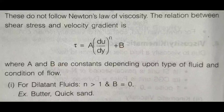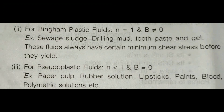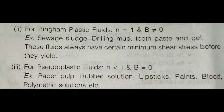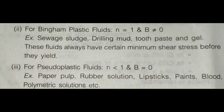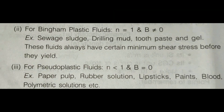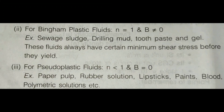For Bingham plastic fluids, n equals 1 and B is not equal to 0. Examples include sewage sludge, drilling mud, toothpaste, and gel. These fluids always have a certain minimum shear stress before they flow. For pseudoplastic fluids, n is less than 1 and B equals 0. Examples of pseudoplastic fluids include paper pulp, rubber solutions, lipstick, paint, and polymeric solutions. Blood is also classified as a pseudoplastic fluid.